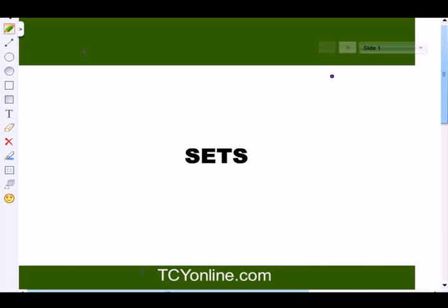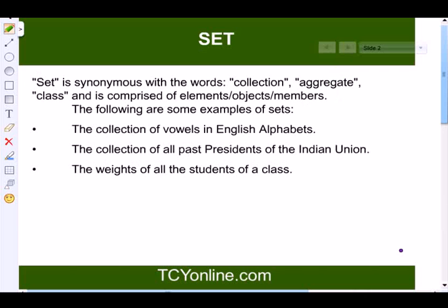Today we will learn about sets and different types of sets. To begin with, let's first see what is set. Set is basically synonymous with the words collection, aggregate, or class. It means that it can be either a set as a collection of something, aggregate of something, or class of something. And it is comprised of certain elements, objects, or members.